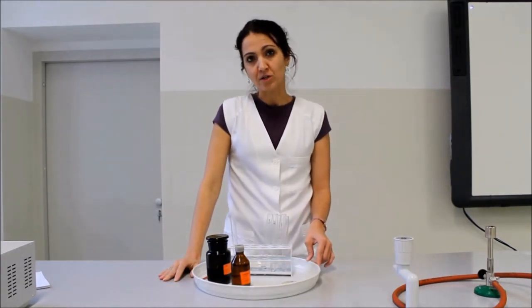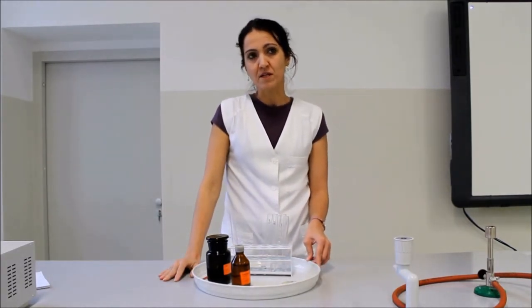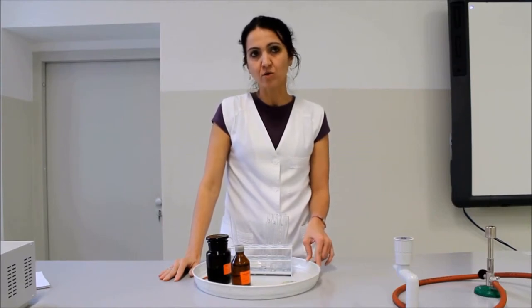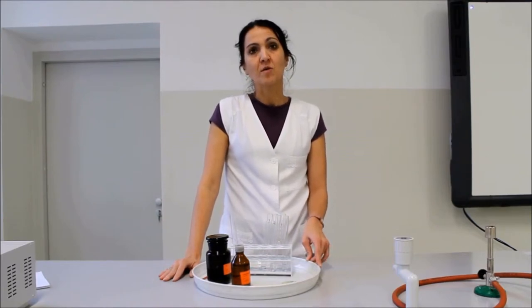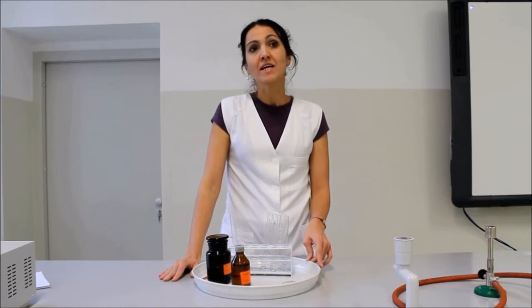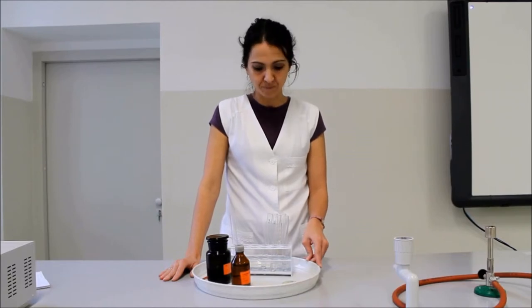Ha végiggondoljuk, hogy milyen anyagokat használtunk — az aceton, a víz és a benzin —, akkor tudjuk, hogy a víz egy poláris oldószer, amely jól oldódik acetonban, a benzin egy apoláris oldószer, amely viszont jól oldja az acetont, de a vizet nem. Ez azt jelenti, hogy azt az anyagot öntöttük bele a másik két kémcsőbe, amely mindkettőben oldódik. Ezek szerint a harmadik kémcsőben acetonnak kellett lennie.